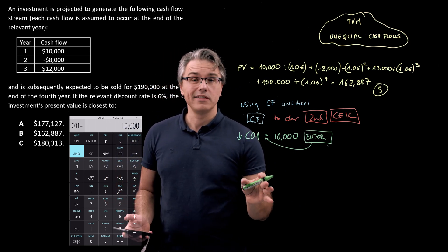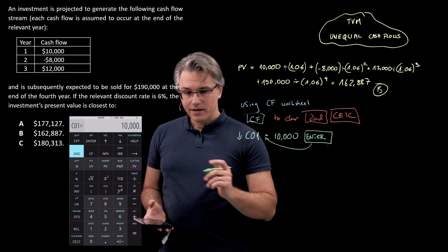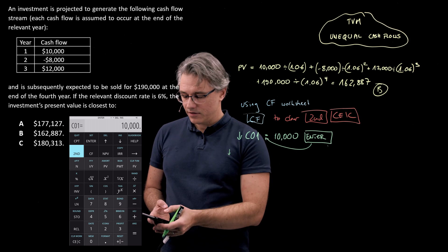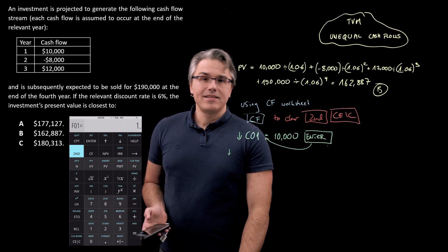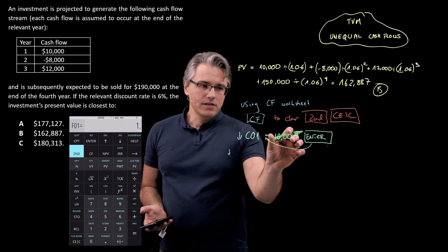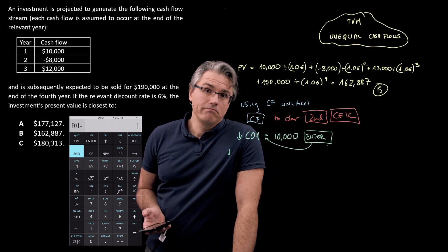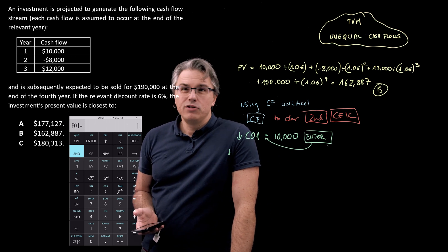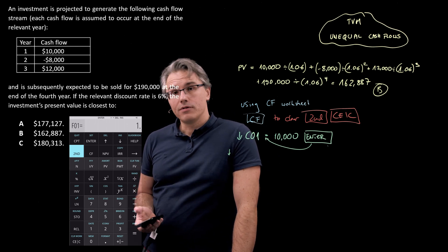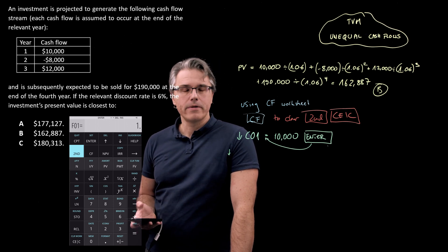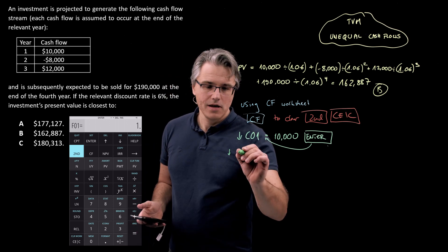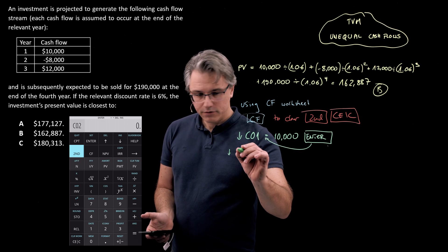So you need to press Enter for the equals sign to appear over here, which means your calculator has accepted the input. If you don't press Enter, it will be ignored. It will not be stored. Now press the down arrow again, and you can see F01. This stands for the frequency of this cash flow. So if it happens for more than one year in a row, you could potentially say two years, three years, or something like this. By default, it's set at one, and that's what we're going to use. We're not going to change this, and I'm going to press the down arrow again.